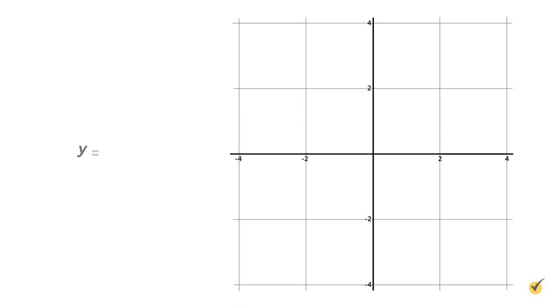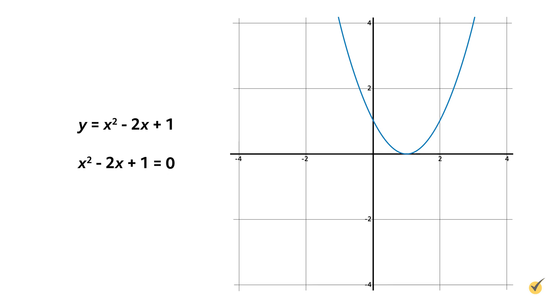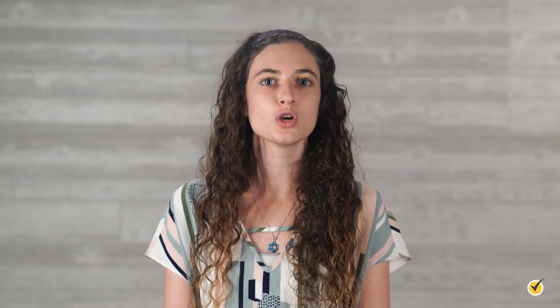Let's try another one. Consider the graph for y equals x squared minus two x plus one. We can use the graph to solve the equation x squared minus two x plus one equals zero. Notice that this graph doesn't pass through the x-axis. Instead, its vertex touches the x-axis at the point one, zero. In this case, there is only one real rational solution: x equals one.